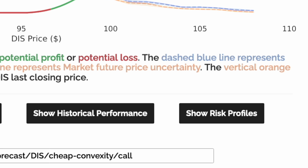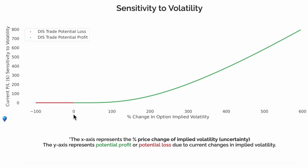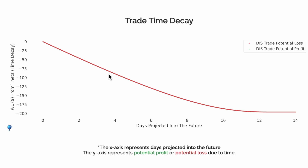Let's dive deeper into the risks of this trade. Since this is a long options trade, this trade will benefit from increases in implied volatility or future uncertainty. In order to pay for the long convexity of this trade, theta, or time decay, will eat away at our profits over time if nothing happens.